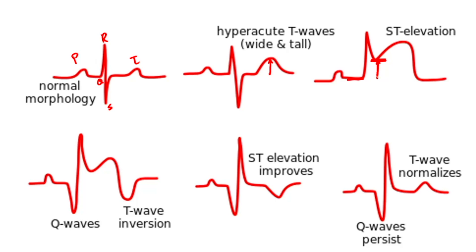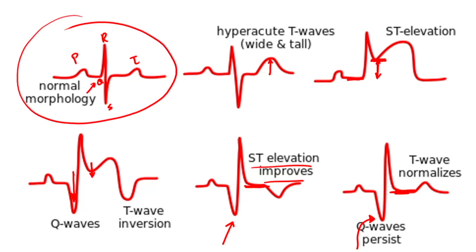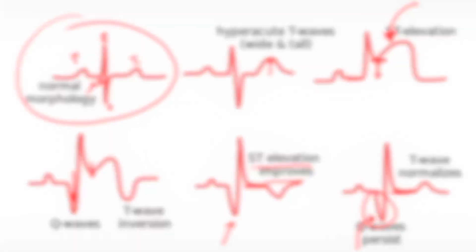As the ST segment starts to resolve, there is a deepening of Q waves. When you see Q waves, that means injury and completion of the myocardial infarction has occurred. The ST elevation then improves back to normal after the acute injury. Normally there is no Q wave, but an acute injury pattern shows ST elevation only in the leads where the heart attack is happening. After the acute portion resolves, you are left permanently with a Q wave, indicating a completed myocardial infarction.